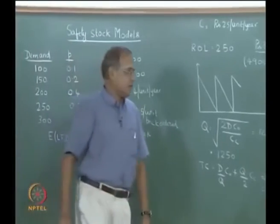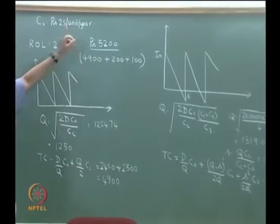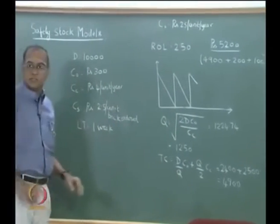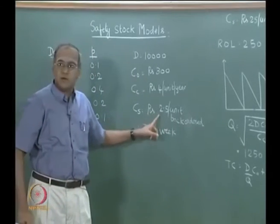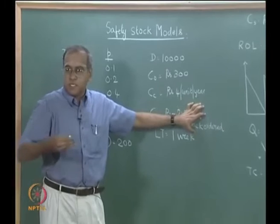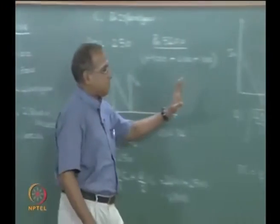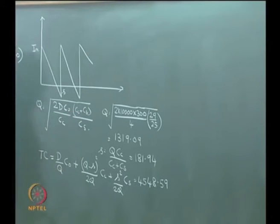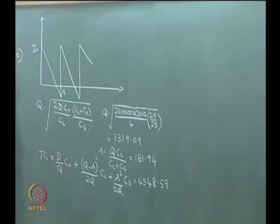A second difference is in the definition of Cs. In the back-ordering model, Cs is defined as rupees per unit per year. But in the probabilistic model calculations, Cs was rupees per unit backorder — not per year. Therefore in those calculations, we multiplied by D/Q, meaning the expected shortage per cycle times the shortage cost times the number of cycles per year. In the deterministic model, Cc and Cs are defined with the same units so that the ratio (Cc + Cs)/Cs appears directly.